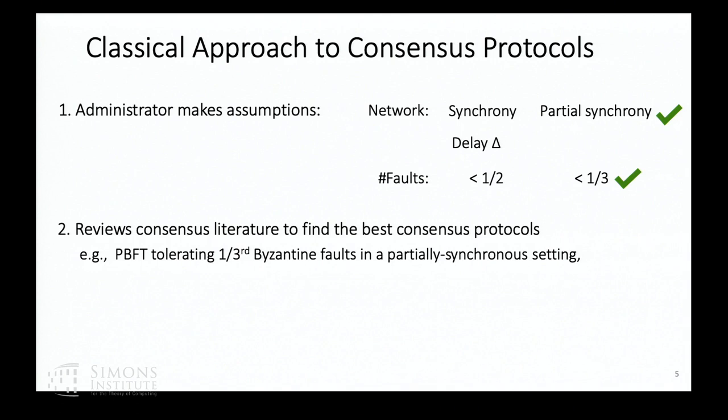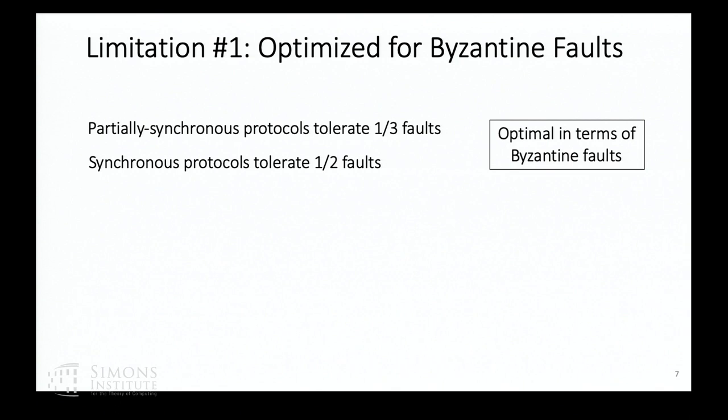For example, if you pick partial synchrony and one third faults, perhaps he picks PBFT. Once deployed, all clients using the system need to agree with the assumptions the administrator makes. Here are some concerns. First, existing consensus protocols are optimized for tolerating a large number of Byzantine faults — partially synchronous protocols can tolerate a third faults, synchronous protocols can tolerate a half — and these are actually optimal in terms of the number of Byzantine faults.